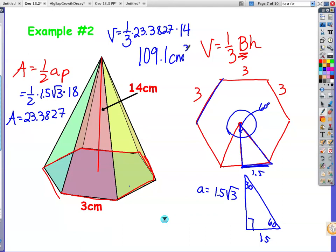One of the things to watch out for is be careful how you type in 1 divided by 3. So 109.1 centimeters cubed is your volume here.